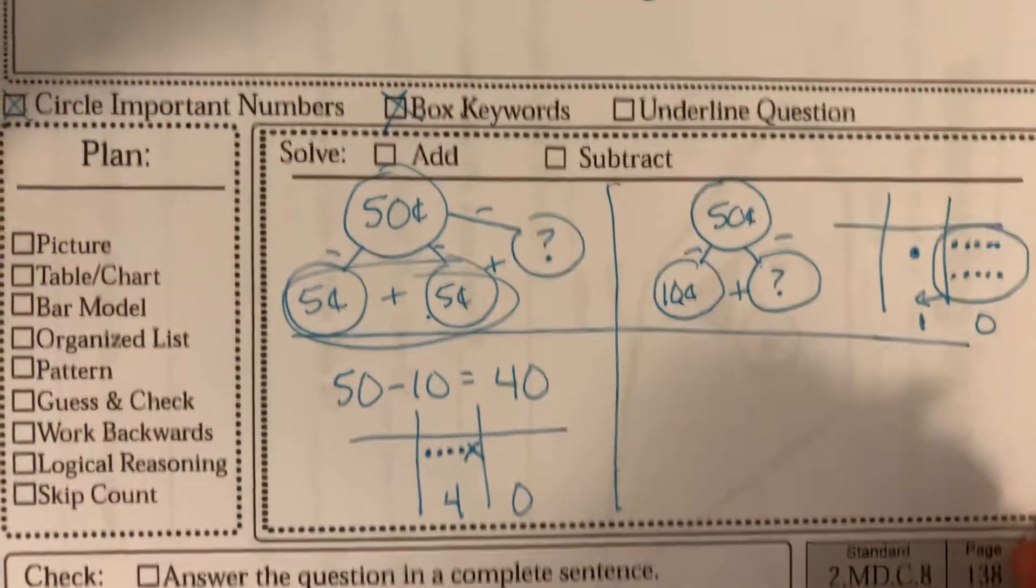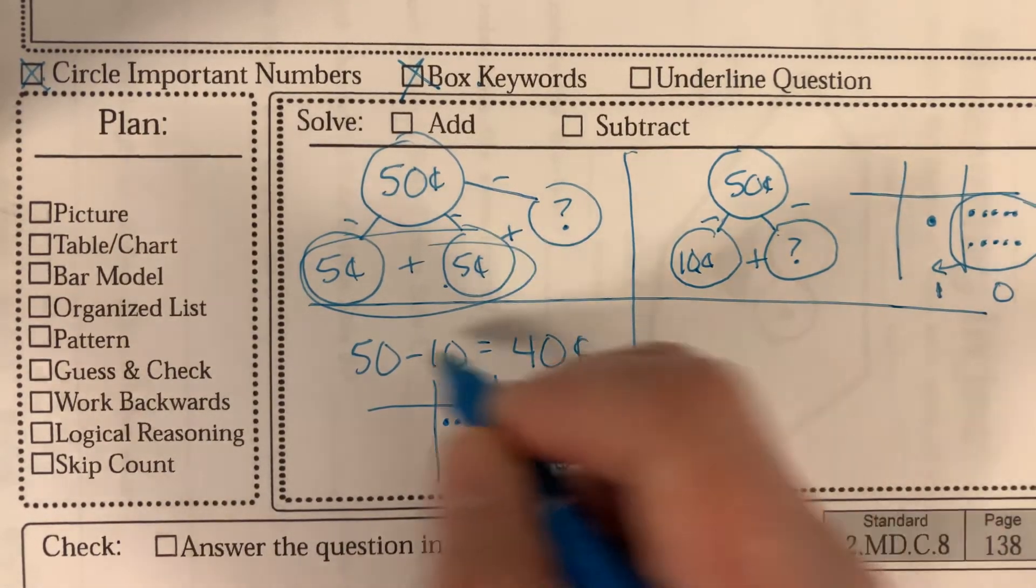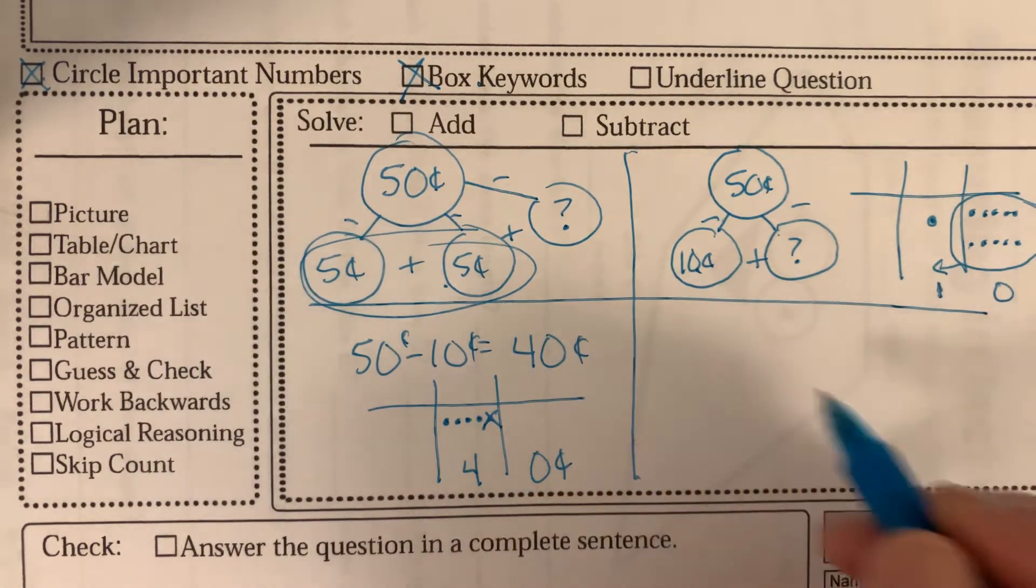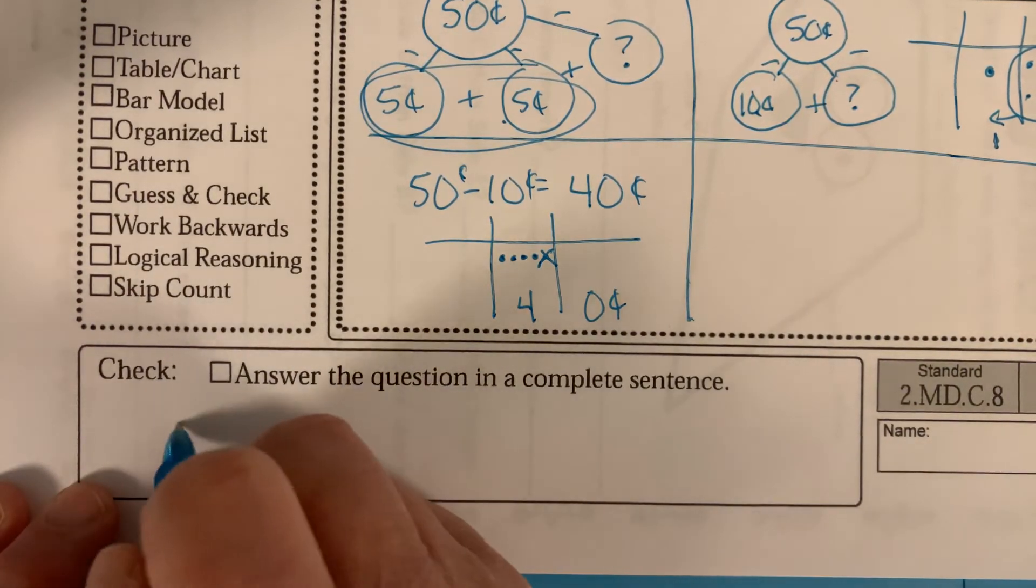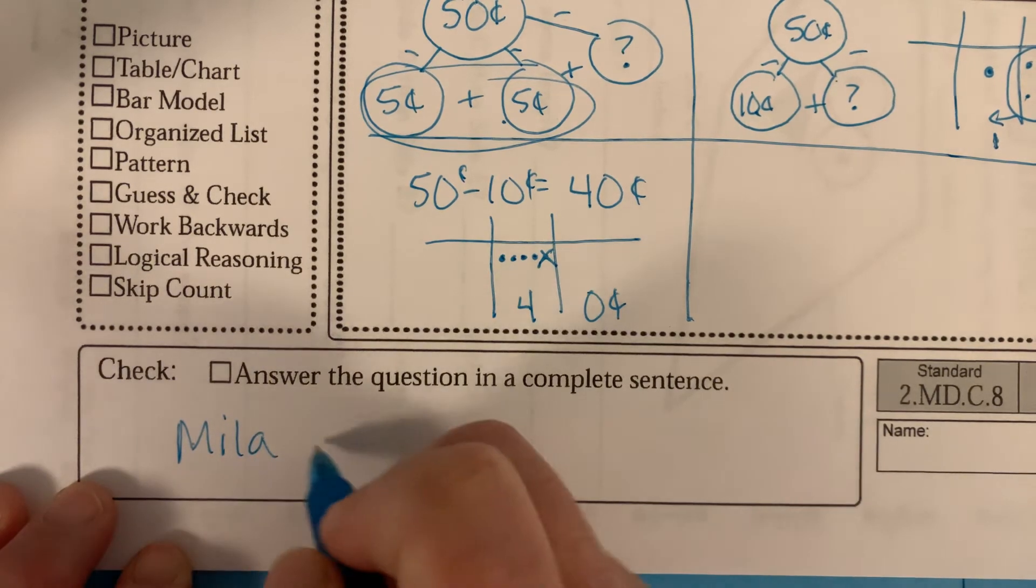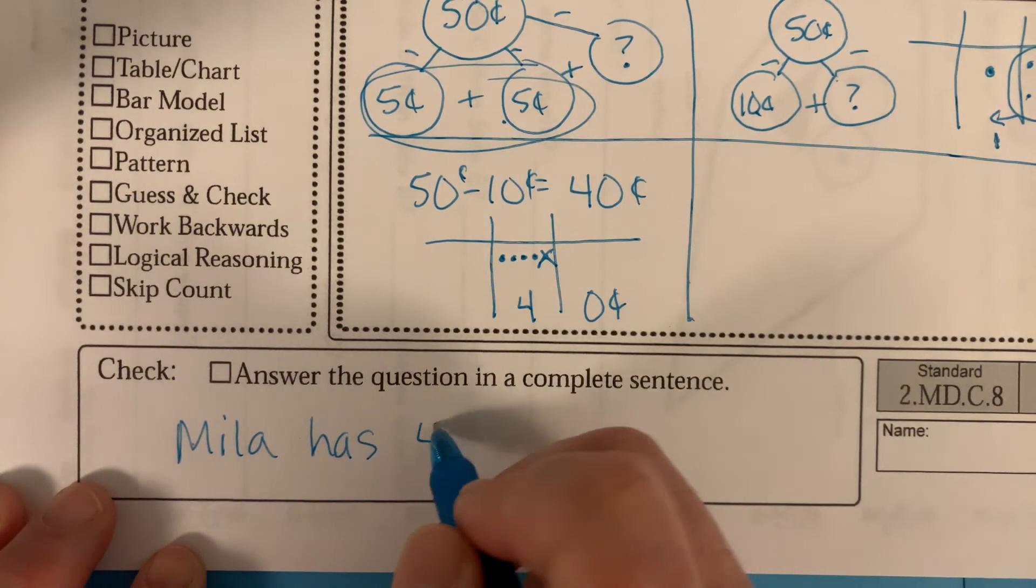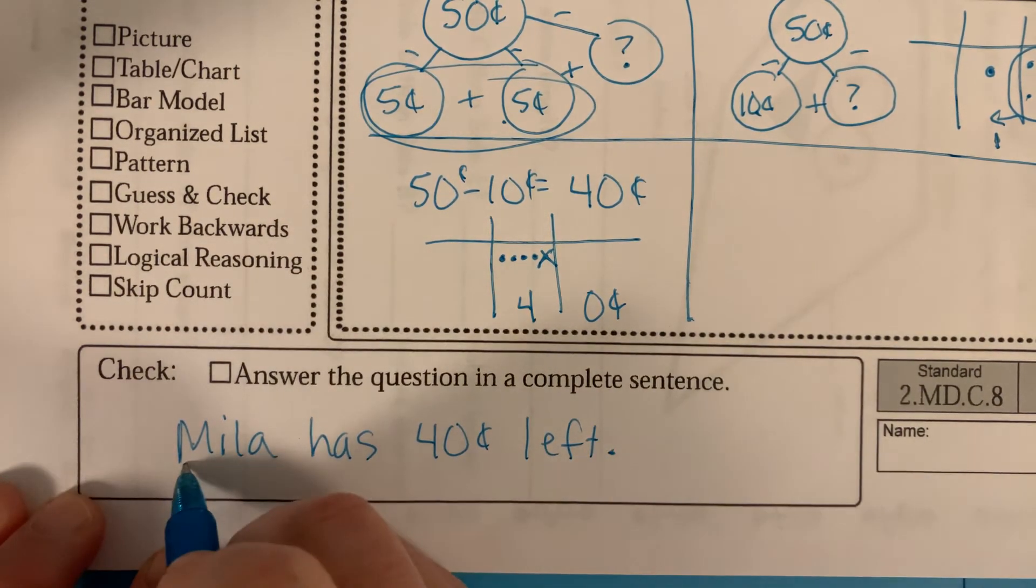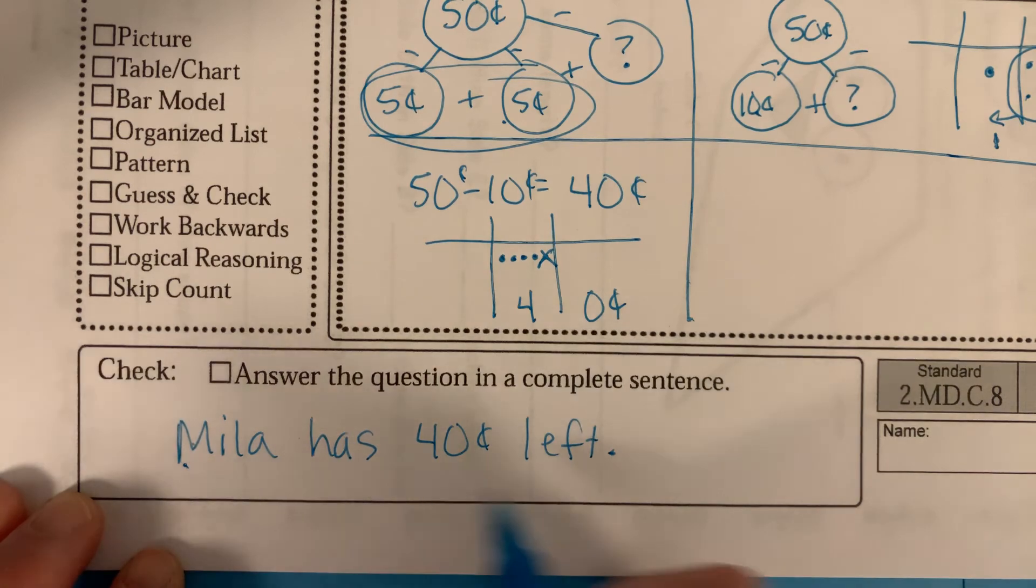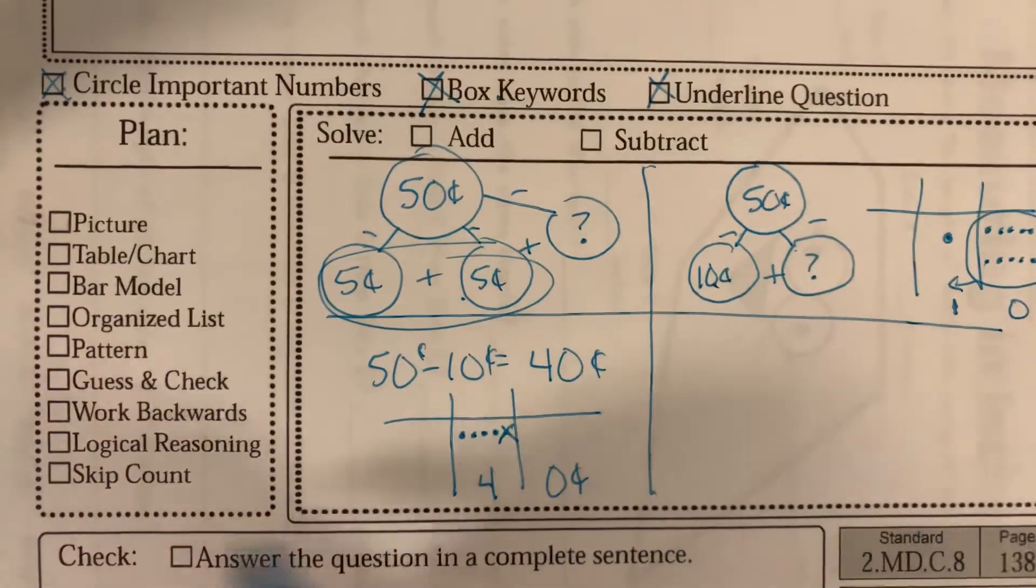All right, so that's our answer, 40 cents. She had 40 cents. We can just add that little cents. And down here, we will answer the question. Mila has 40 cents left, capital because it's a name in the beginning of a sentence, period at the end. Here, I forgot to check off that underline of the question, and we answered in a complete sentence.